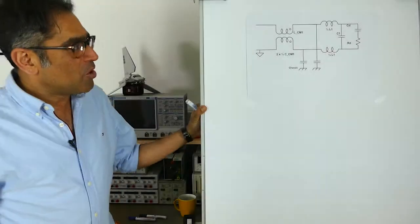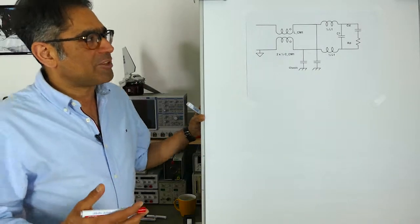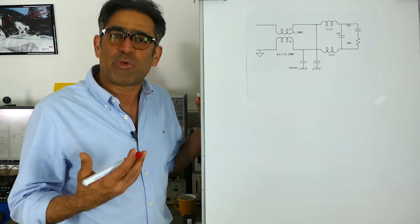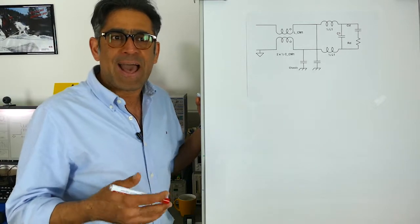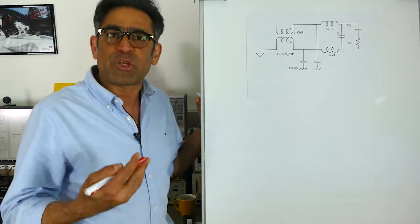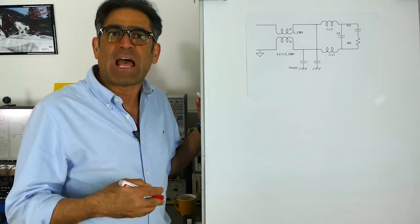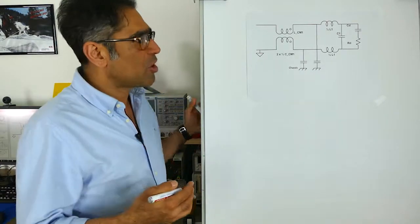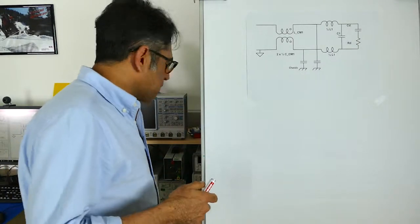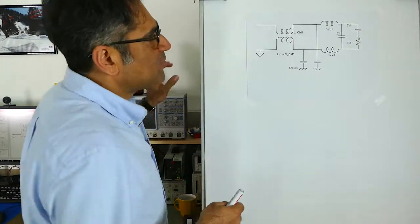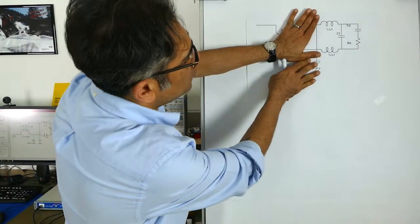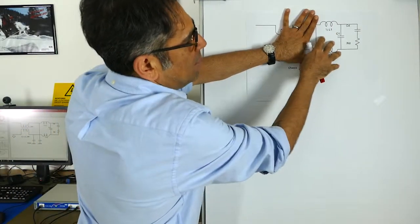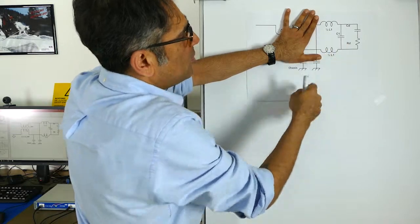In the previous videos we discussed how we go about designing the differential mode filter and the damping components, and how we use the impedance paper in order to do so. Let's say for now that we have designed our differential mode components, which is right here at the moment.